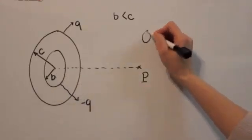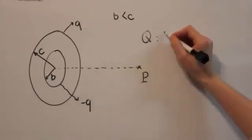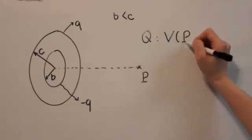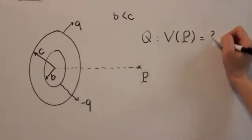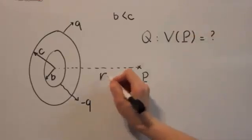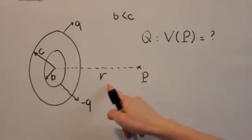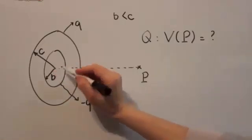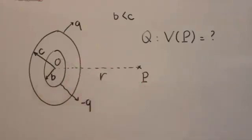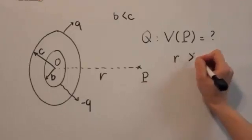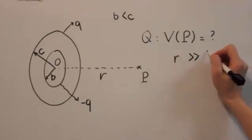The question is what is the electric potential at point P, located at distance R from the center of the rings at point O. In this case, consider R really large compared with the ring radii.